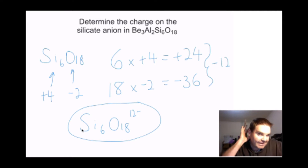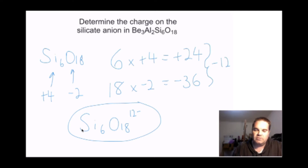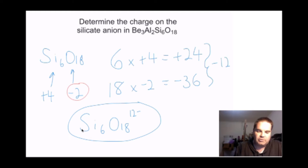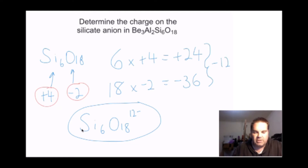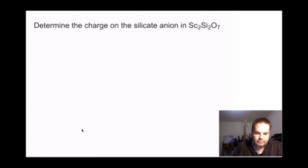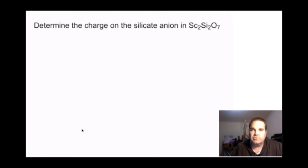Calculating the charges on silicates is pretty straightforward. You just always use minus 2 for oxygen and plus 4 for your silicons. Here's another one: determine the charge on the silicate anion in SC2Si2O7.